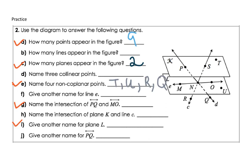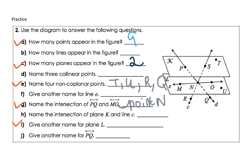Name the intersection of P, Q and M, O — they both intersect at one point, which would be point N. Give another name for plane L — we have to find three points that are non-collinear. One example is plane N, O, U. You could have done M, O, U — there are multiple examples for these.